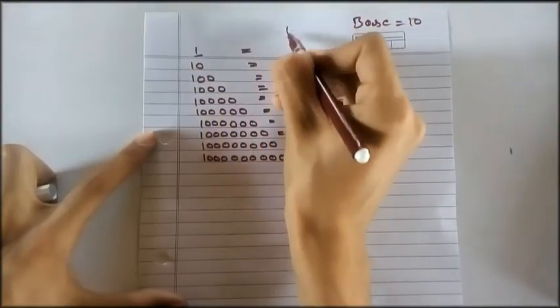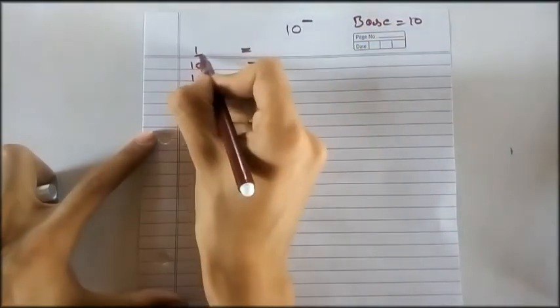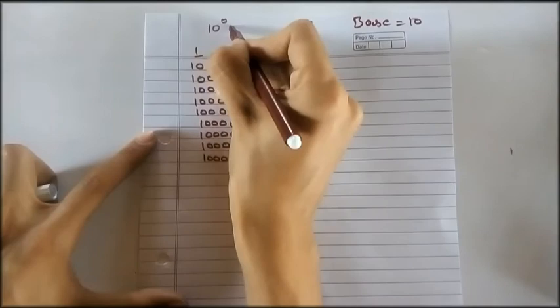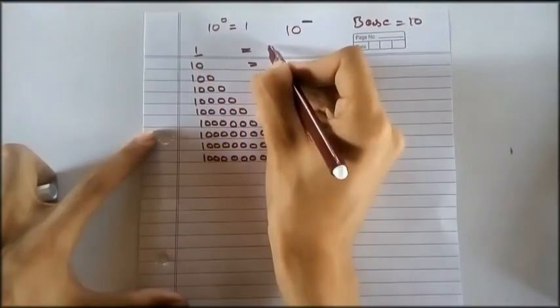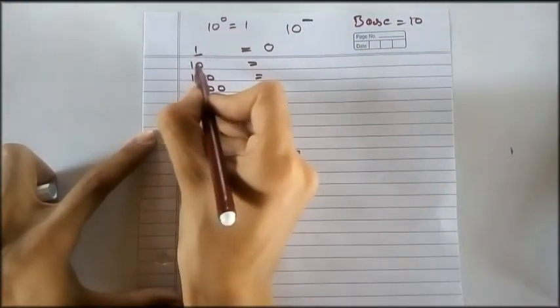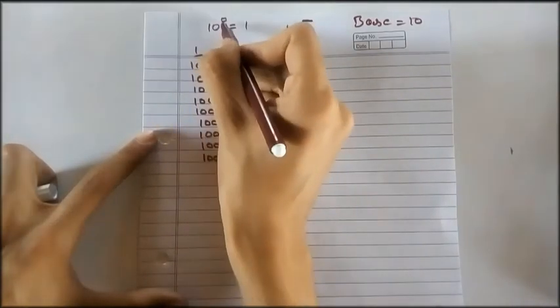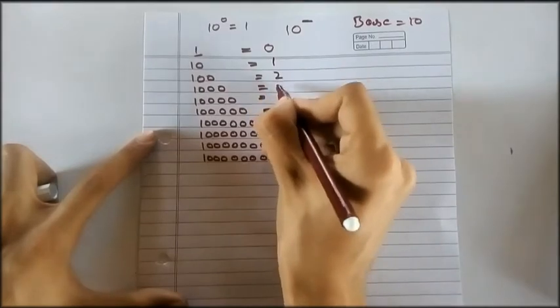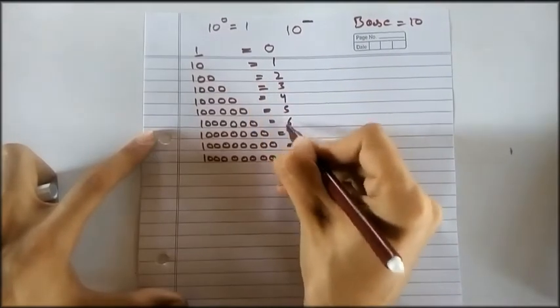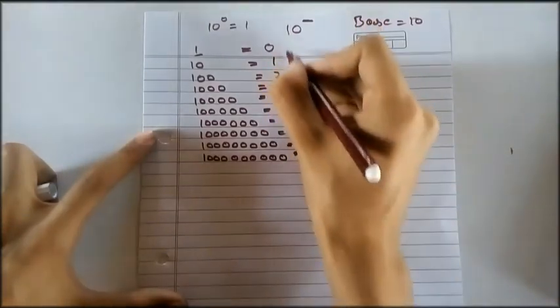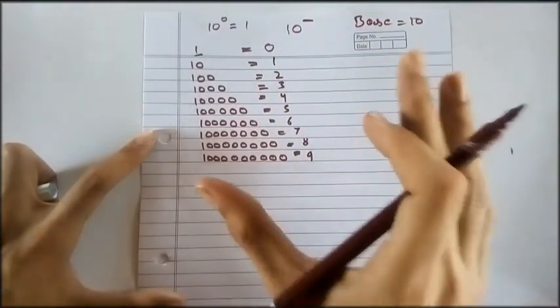Now think, how much power will 10 have to get 1? That is 10 raised to the power of 0 is equal to 1. So 0 here. Now think, how much power will 10 have to get 10? That is 1 here. Here 2, 3, 4, 5, 6, 7, 8, 9. This is showing the power and this is the log.